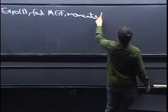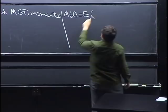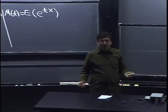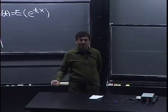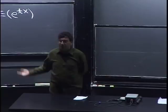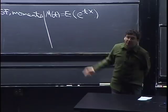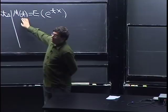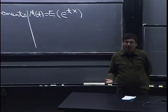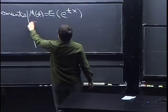The word 'moment' comes from physics — those of you who have done moment of inertia and similar things will recognize there's a pretty strong analogy between variance and moment of inertia. It came into statistics via physics because of this analogy. Anyway, let's find the MGF. By LOTUS, M of t — remember, just by definition — it's just the expected value of e to the tx. This e to the tx is just some random variable; we're taking its expectation and viewing this as a function of t. Note that t is a dummy variable. The MGF is a very useful bookkeeping device for keeping track of moments, and it's another way to describe a distribution rather than a CDF or PDF.